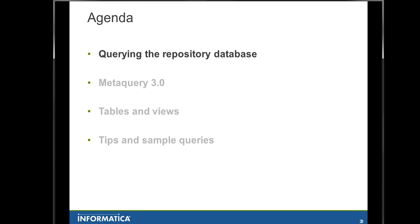In this kind of situation, using the repository manager for instance may not be the more productive way to do that. Also, you may want to have a list of all your folders, all your sources, all your source tables that actually have SQL query overrides, some things like that. I will just show you guys how to get these in a more efficient way.